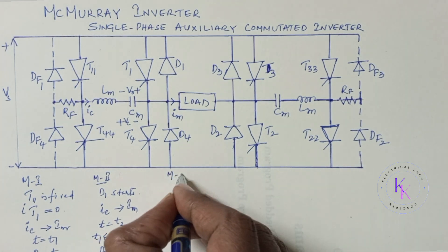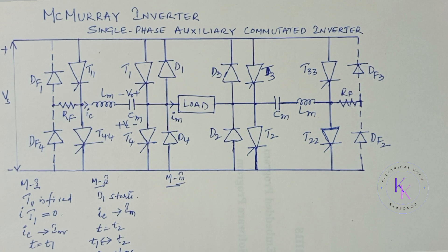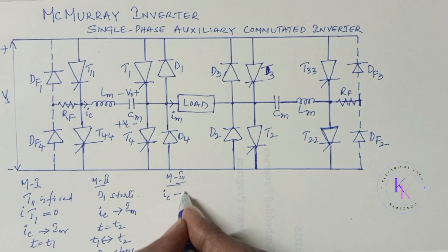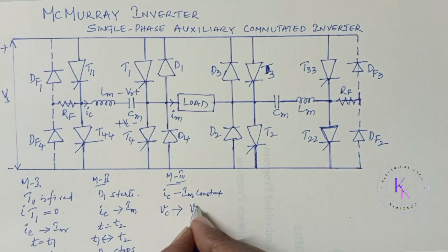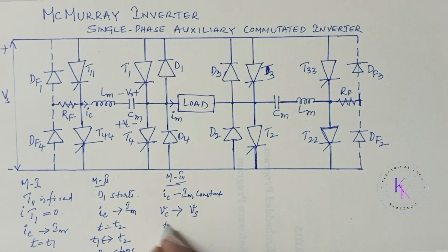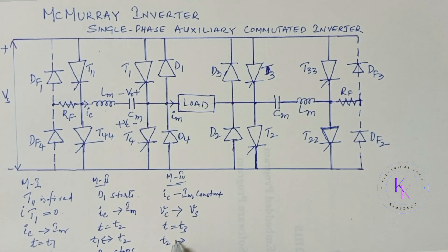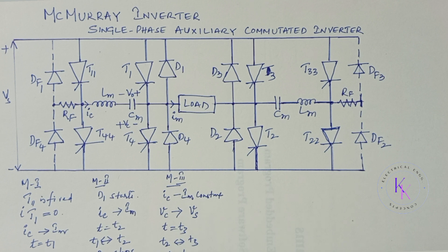Mode 3: This mode starts when D1 stops conducting. The capacitor recharges through the load at an approximately constant current of IM. This mode ends when the capacitor voltage becomes equal to the source voltage Vs at T equals to T3. In between T2 and T3, this mode operates, the capacitor voltage tends to overcharge due to the energy stored in the inductor LM.